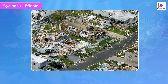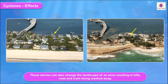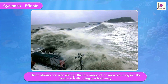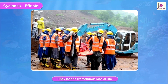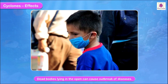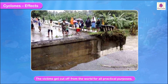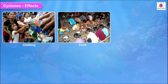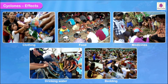Hurricanes can cause damage to property worth billions of dollars every year, as well as to natural surroundings. These storms can also change the landscape of an area, resulting in hills, roads, and trails being washed away. They lead to tremendous loss of life. Dead bodies lying in the open can cause outbreak of diseases. The victims get cut off from the world for all practical purposes and thus need supplies of clothing, food, medicines, drinking water, and bedding.